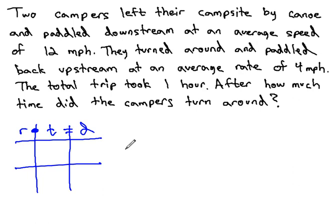Here we have two campers who leave their campsite by canoe and paddle downstream at an average speed of 12 miles per hour. Let's put that in our table. Speed is our rate of 12 miles per hour.